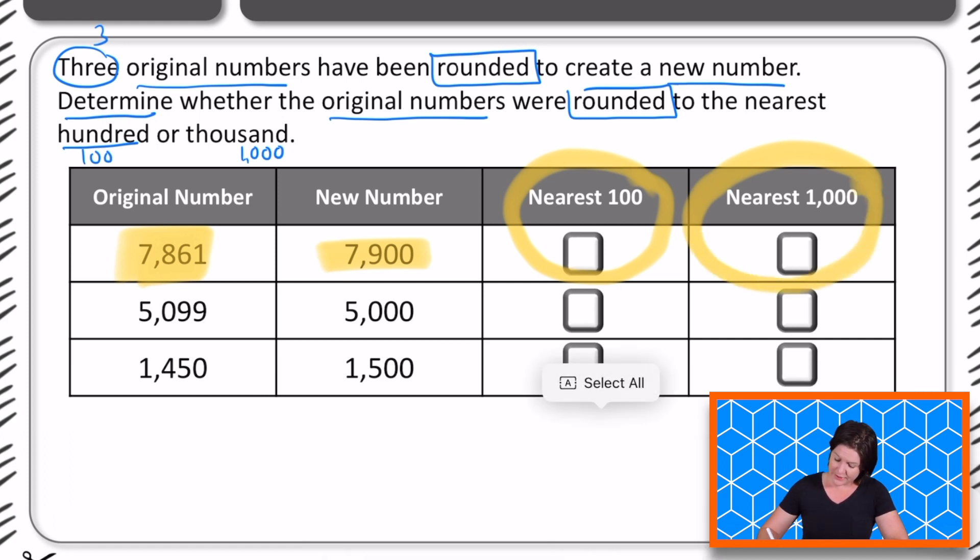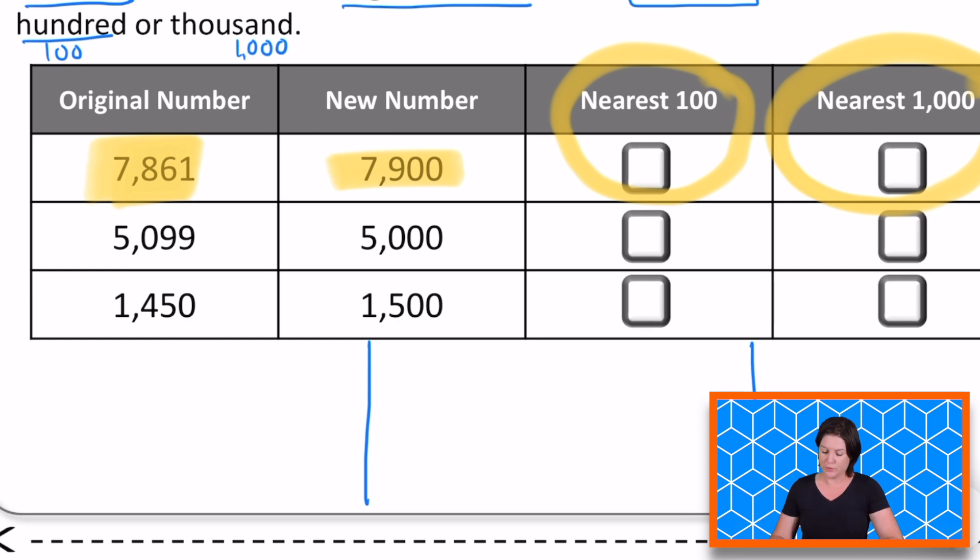So because I have three original numbers, I know that I'll need to create three working spaces. Let's go ahead and get started with the first one, 7,861.